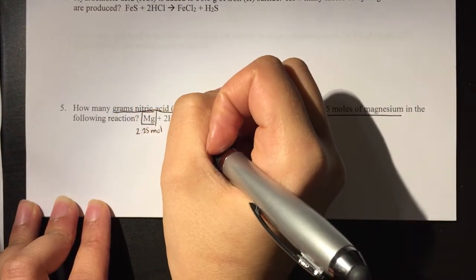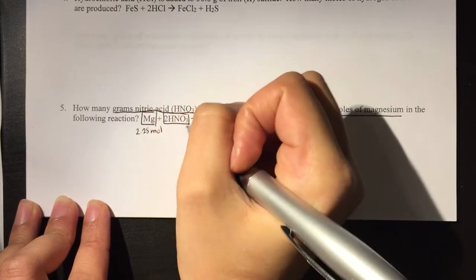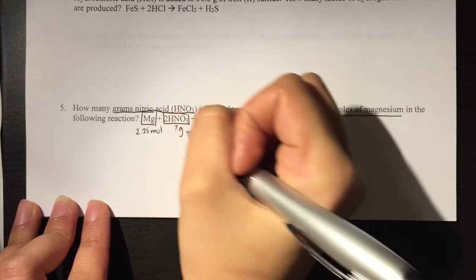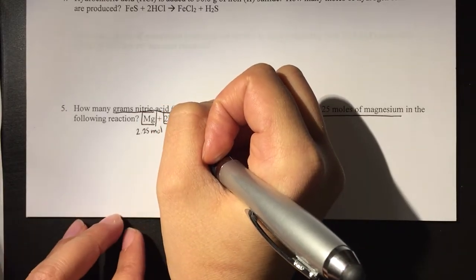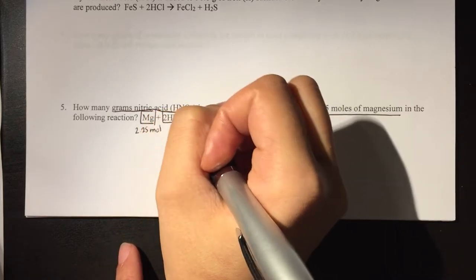So I'm going to go over into my nitric acid, I'm going to put a box around there, and I'm trying to solve for grams. So I know when I set up my problem, I should end with my unit being grams of HNO3.